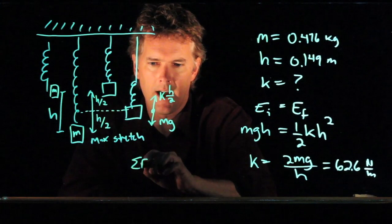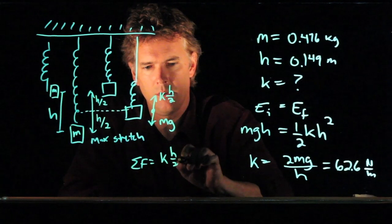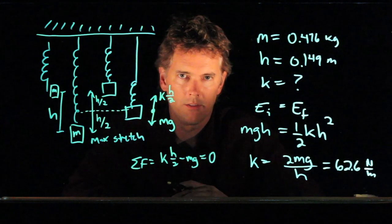And so now if I set those equal, sum of the forces have to be 0. What do we have? We have k h over 2 minus mg equals 0.